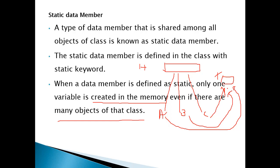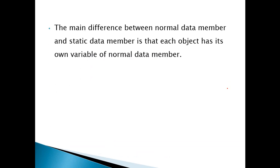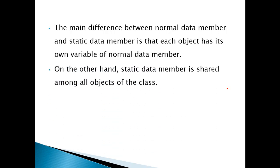The main difference between a normal data member and a static data member is that each object has its own variable for normal data members. On the other hand, static data is shared among all objects of that class.